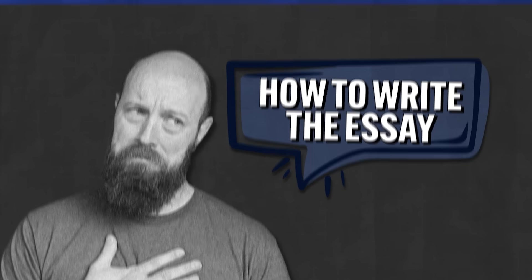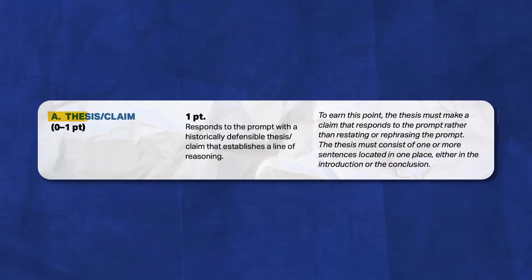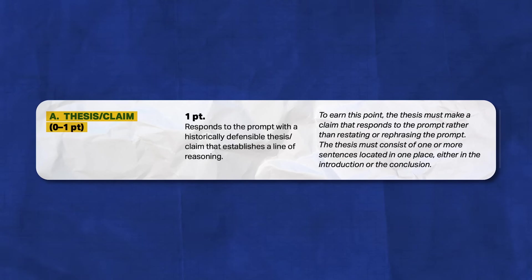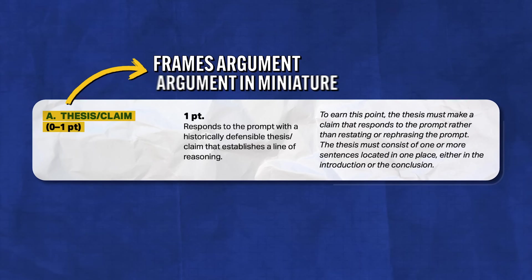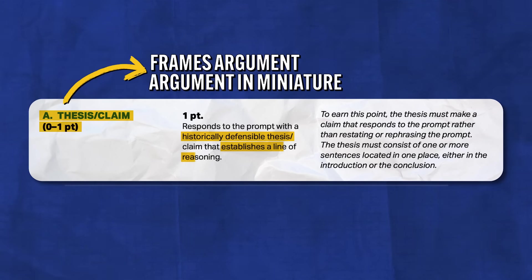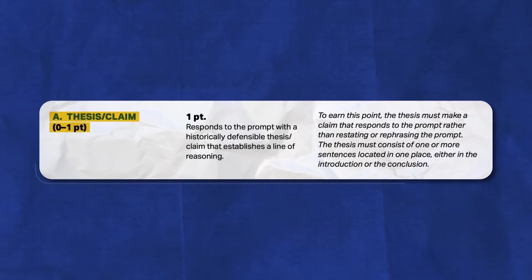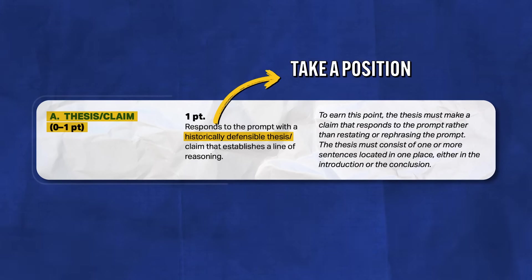Step three is to actually write your essay, so let me go through the rubric point by point so you know exactly what you need to do to earn all seven points. The first point on the rubric is for the thesis, and you can earn up to one point here. The thesis is one of the most important things you'll write because it frames your entire argument — your thesis should be your entire argument in miniature. The rubric says you earn this point by writing a historically defensible thesis that establishes a line of reasoning.